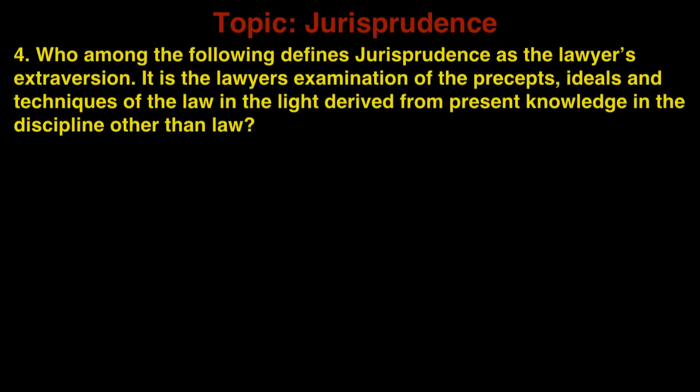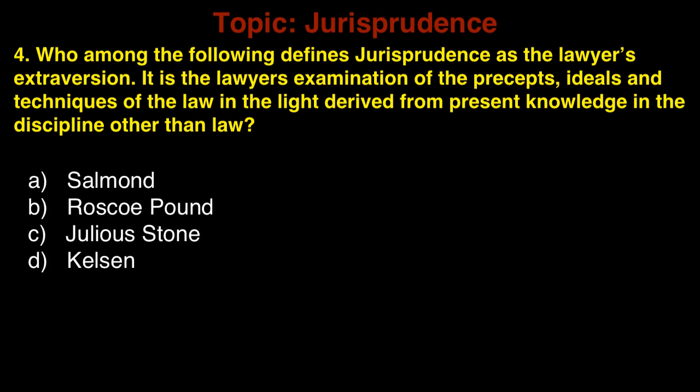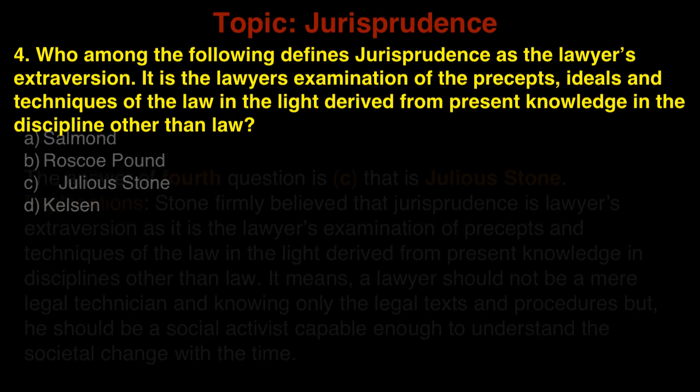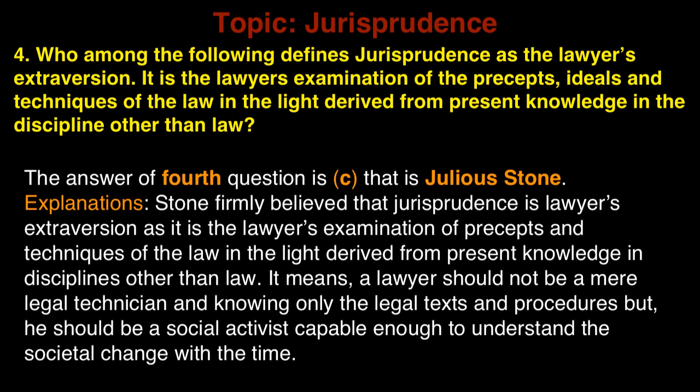Question 4: Who among the following defines jurisprudence as the lawyer's extroversion — that is, the lawyer's examination of the precepts, ideals, and techniques of the law derived from present knowledge in disciplines other than law? A. Salmond, B. Roscoe Pound, C. Julius Stone, D. Kelsen. The answer is C, that is Julius Stone.